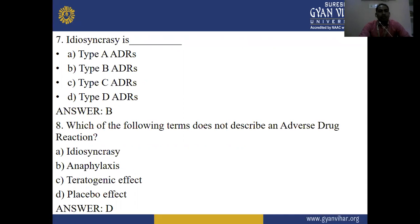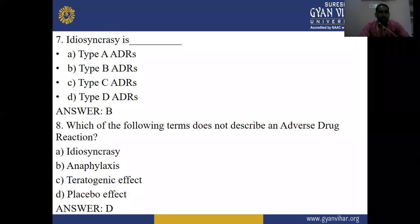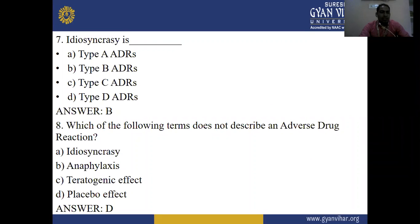Question 7: Idiosyncrasy is — (a) Type A adverse drug reaction, (b) Type B adverse drug reaction, (c) Type C, (d) Type D. The right answer is B — Type B adverse drug reactions. Question 8: Which of the following terms does NOT describe an adverse drug reaction? (a) Idiosyncrasy, (b) Anaphylaxis, (c) Teratogenic effects, (d) Placebo effect. The right answer is D — placebo effect does not describe an adverse drug reaction.